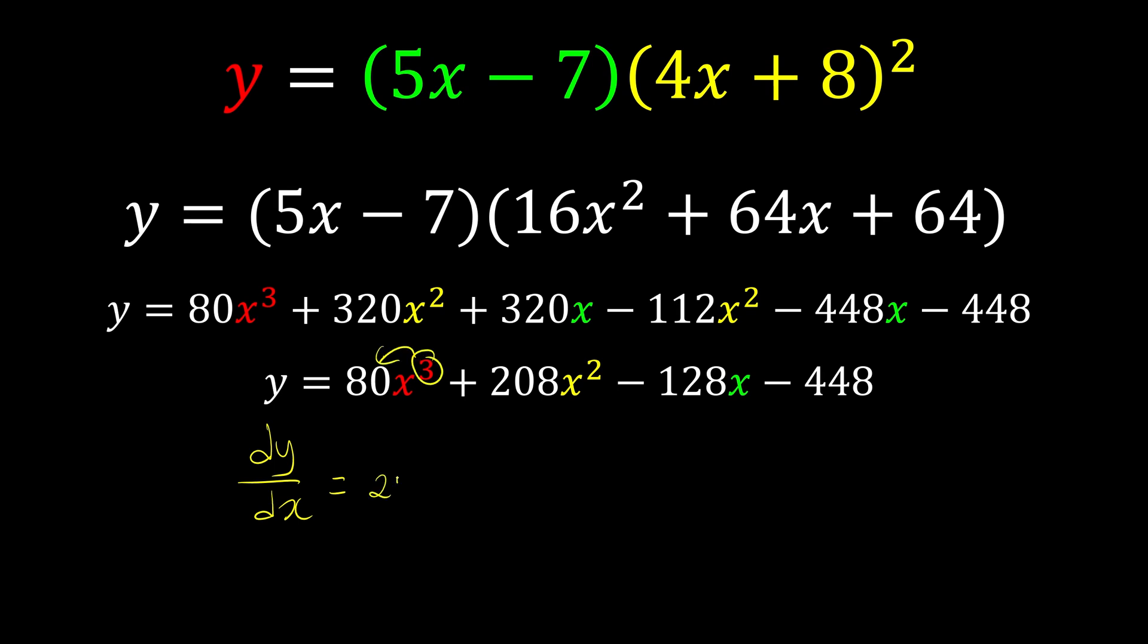So 3 times 80 is 240x². 2 times 208 is going to be... 2 times 208 is 416x.